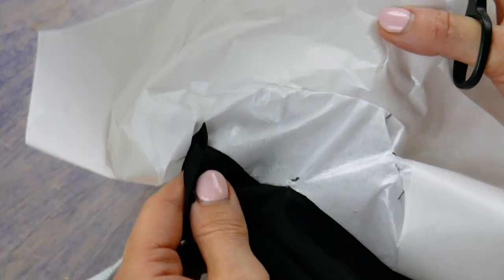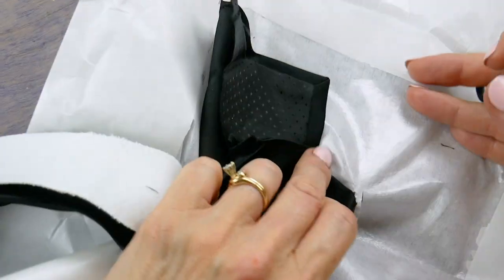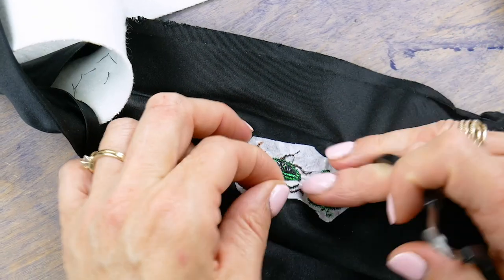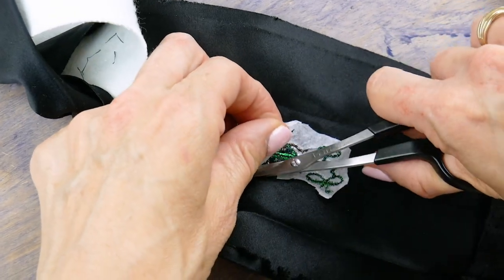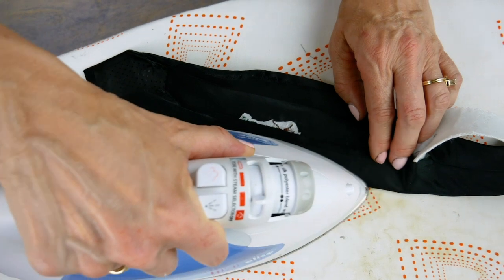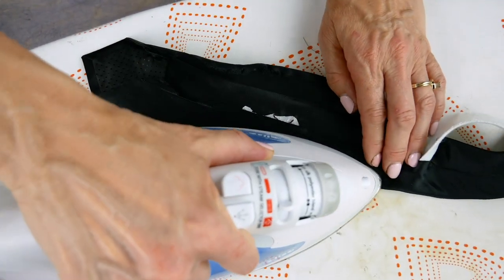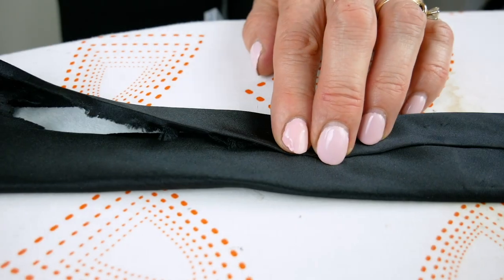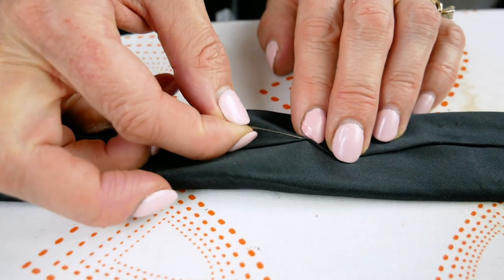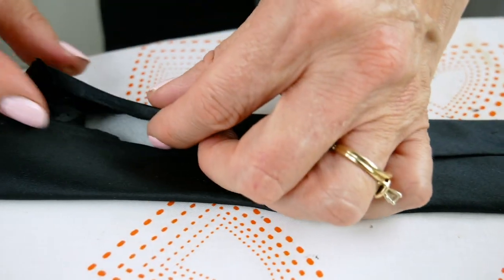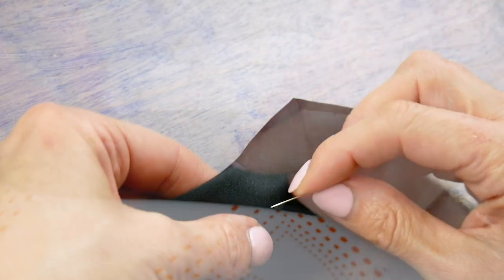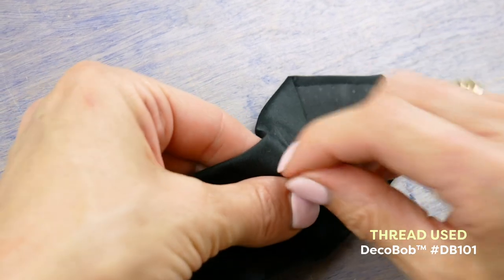Then, using a hand needle and DecoBob, hand stitch the back of the tie closed again.